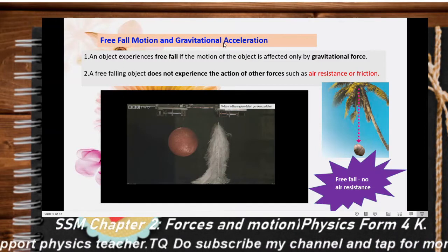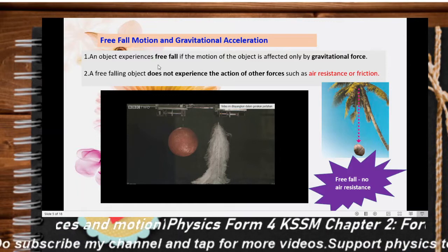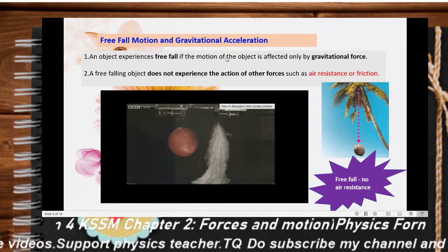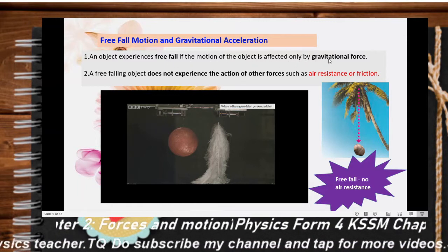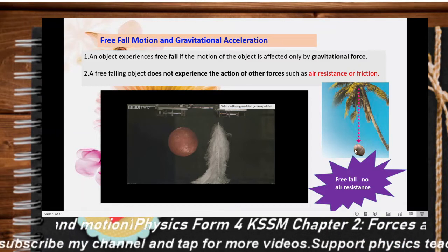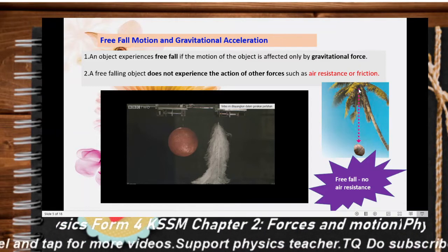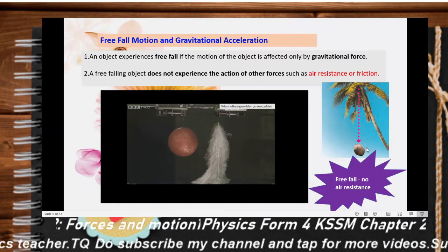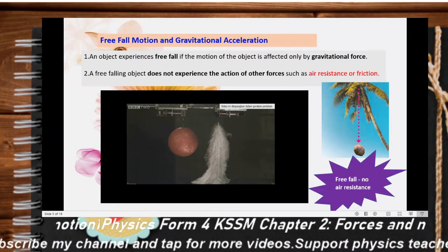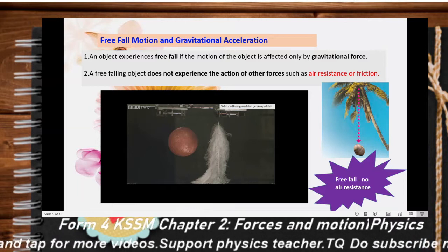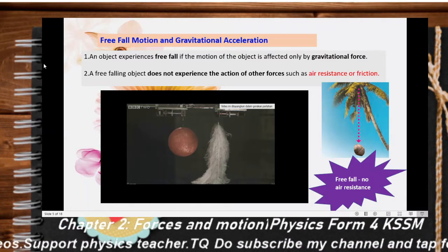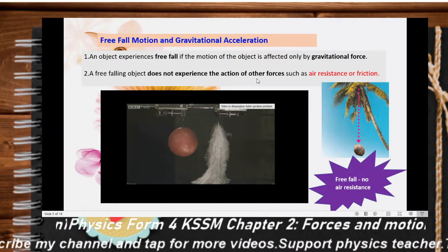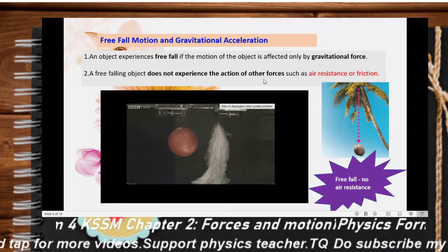Freefall motion and gravitational acceleration — what is the meaning of freefall? An object experiences freefall if the motion of the object is affected only by gravitational force. For example, a coconut that falls — there will be air resistance, but if the value of air resistance is too small, we say it is negligible, meaning no air resistance acts on it. A free-falling object does not experience other forces such as air resistance or friction.